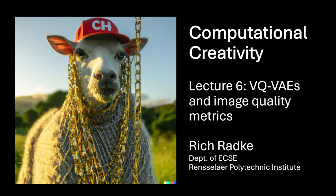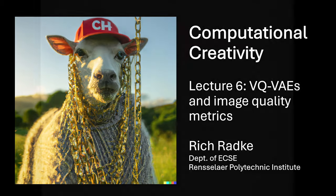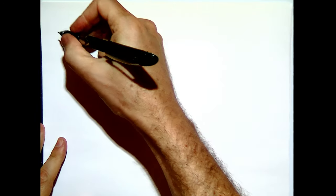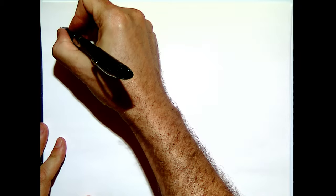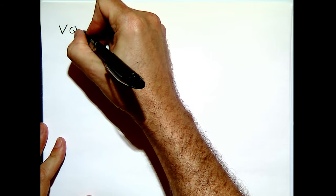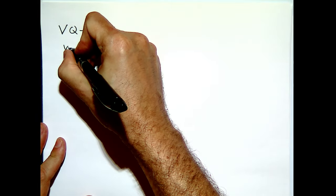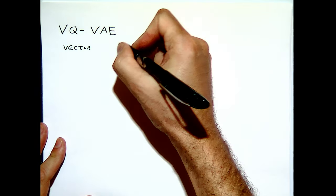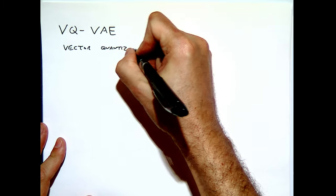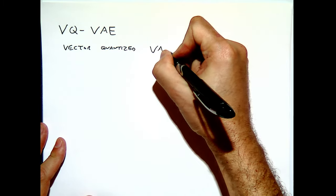Today's lecture is on extensions to VAEs. Last time, we introduced the basic variational autoencoder, and today I want to talk about an advancement to the VAE that turned out to be even better. Today is kind of two parts. The first part is basically extensions of VAEs, in particular something called the VQVAE, which stands for Vector Quantized Variational Autoencoder.